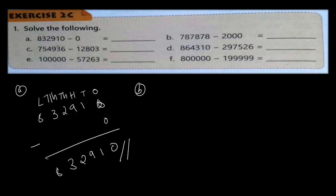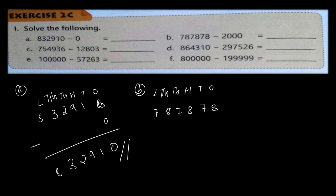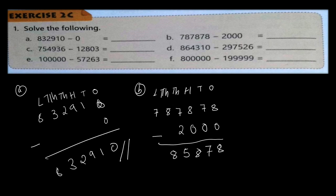For number B: how many digits are there? Three plus three makes six — so ones, tens, hundreds, thousands, ten thousands, and lakhs. The number is 787,878. Two thousand is a four-digit number, so we start from here: 2,000 becomes 2-0-0-0. Now: 8 minus 0 is 8, 7 minus 0 is 7, 8 minus 0 is 8, 7 minus 2 is 5, and 8 and 7 come down.